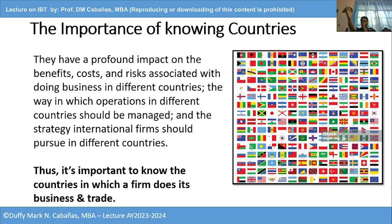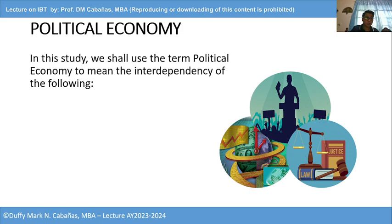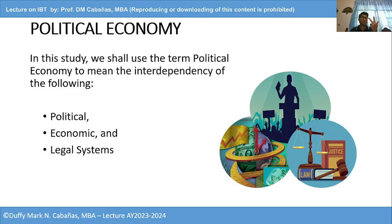It's like courtship — you need to know the family, the background, and all. Or if you join a community, you need to understand how they do things. As the saying goes, when in Rome, do as the Romans do. Similarly, we can apply the same adage in our study of international business and trade. Let's discuss these three things which we will call political economy. In this study we shall use the term political economy to mean the interdependency and intertwining of political, economic, and legal systems.